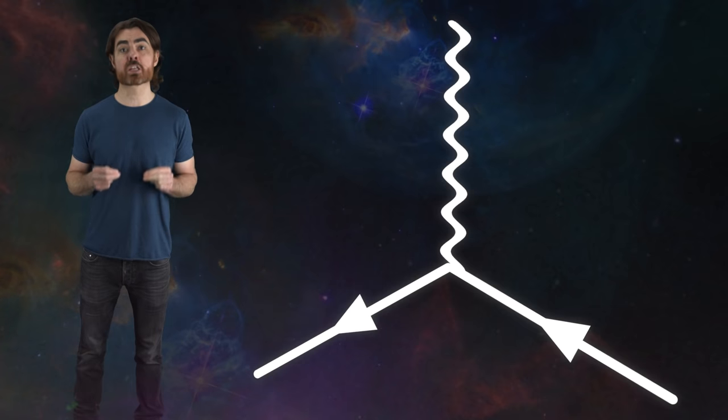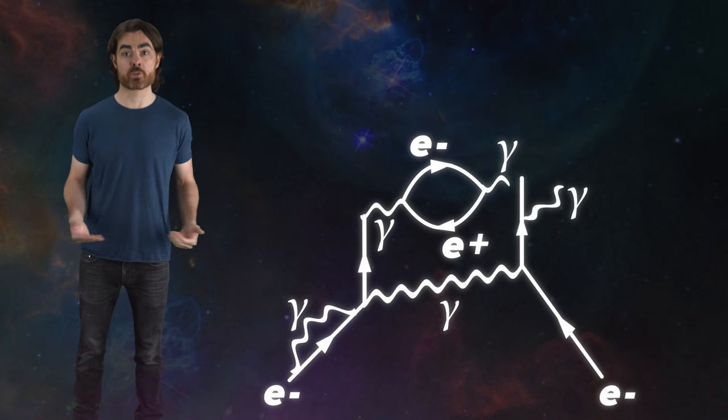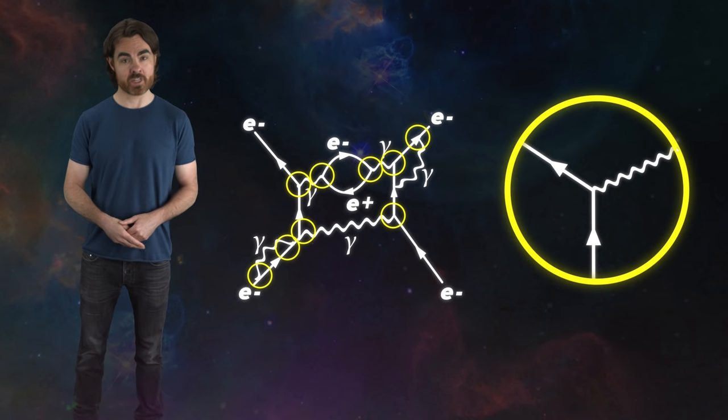If an electron and positron both go in, then their charges cancel, so a zero-charged photon must leave. Similarly, if a photon creates a negatively charged electron, it must also create a positively charged positron. There are other more complex ways in which ingoing and outgoing particles can balance charge, but as we'll see, all of these can be built up from this one vertex.